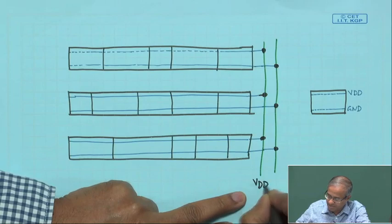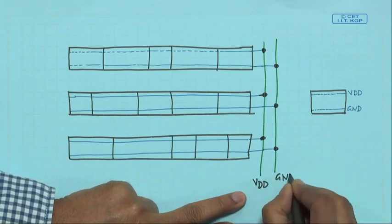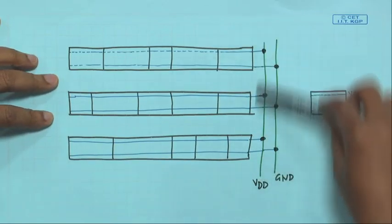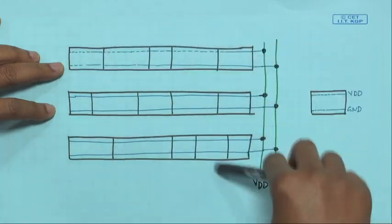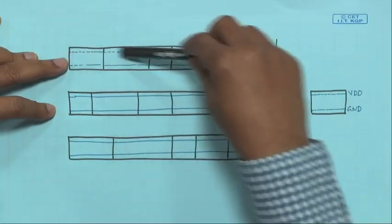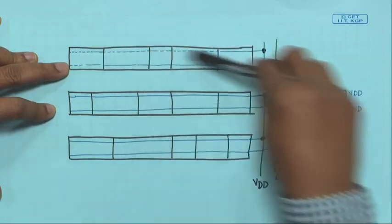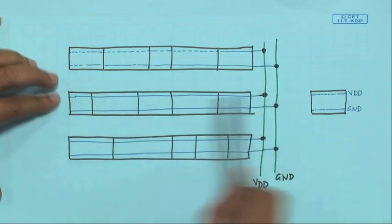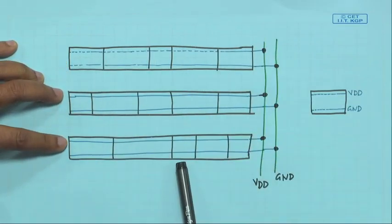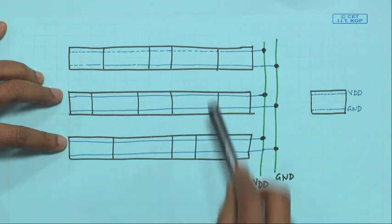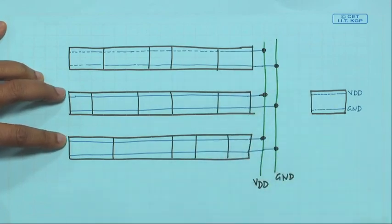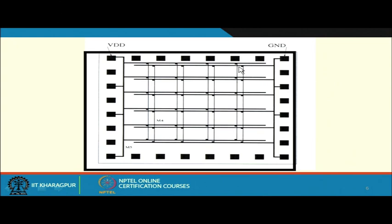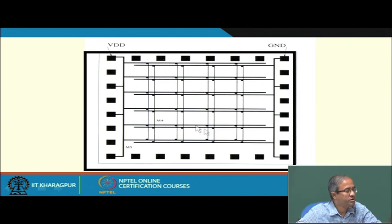These horizontal lines run on metal layers. Using another metal layer for vertical connections — connected via via connections — the VDD and ground connections run vertically on one layer while all horizontal metal connections across the cells connect to those vertical lines via vias. The layout becomes very regular in standard cell design.